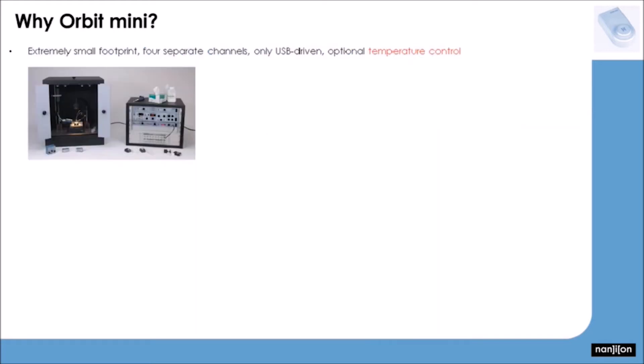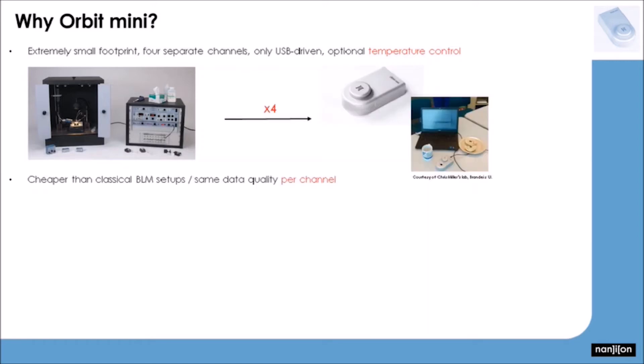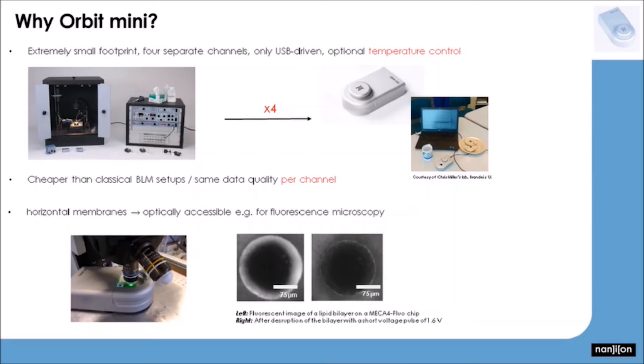And what makes the Orbit Mini so special for this task? Well, take a classical BLM setup. They are totally fine, but have a large footprint due to the Faraday cage, and typically only offer one recording channel via a single-channel amplifier and an additional digitizer. The Orbit Mini, in contrast, offers four separate recording channels at a way smaller footprint, but otherwise same data quality and lower price. And due to the horizontal alignment of the lipid membranes, the Orbit Mini can be placed under a microscope to allow for an additional optical readout while recording the electrical signal.